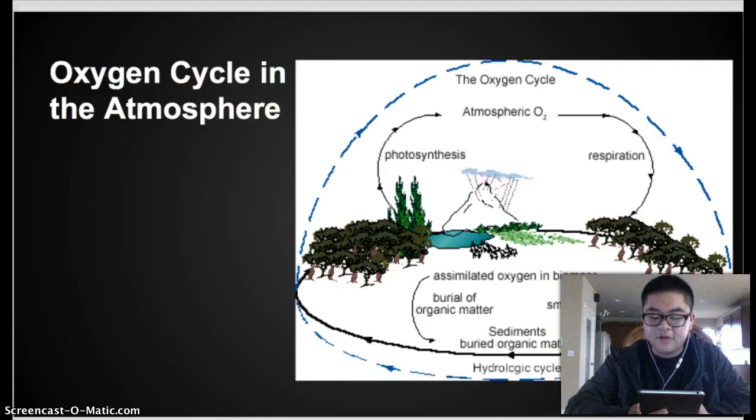This cycle is important because it helps to shield the Earth from the majority of harmful ultraviolet radiation, turning it into harmless heat before it reaches the Earth's surface.